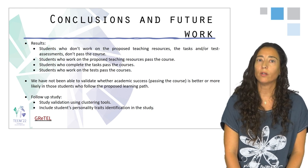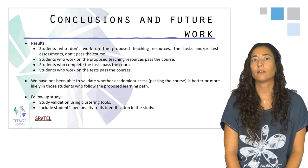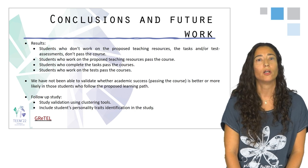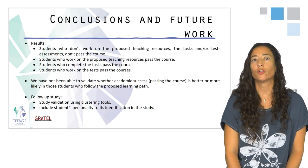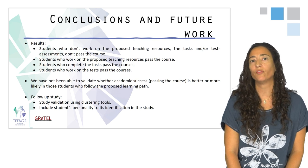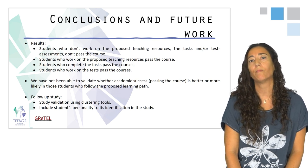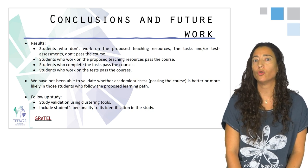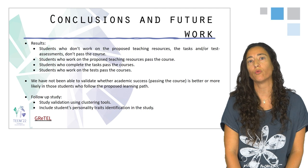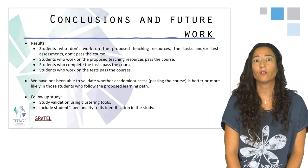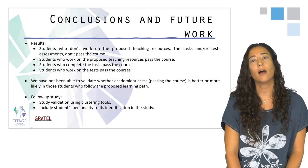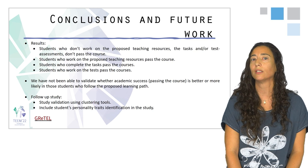Up to this point, we can conclude that students who don't work on the proposed teaching resources, the tasks, and/or the self-assessment test don't pass the course. Students who work on at least one of each of these learning items designed pass the course. We cannot say whether academic success is better in those students who followed the proposed path, although we observed a relationship between task completion and resource completion, and a higher confidence in the association rules focused on the tasks.